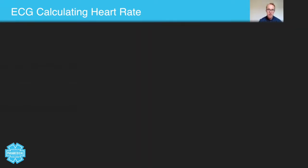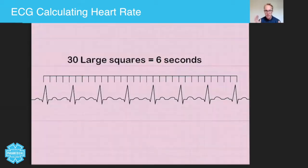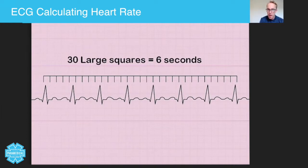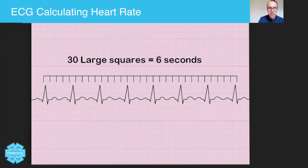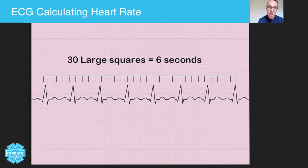Now the other method works like this. You need 30 large squares, so you'll need a longer strip — that's one of the disadvantages. What it's saying is 30 large squares is equal to six seconds. So what we do is take our 30 large squares, count how many R-waves there are: one, two, three, four, five, six, seven, eight — and we multiply by 10, because six times 10 gives you a minute. That's how that one's calculated. So that's 80 beats per minute.